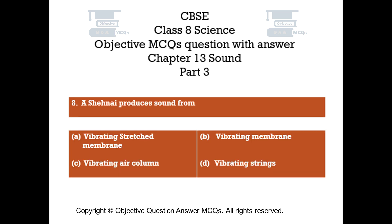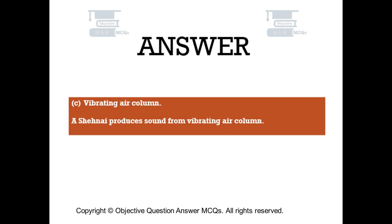Question number 8. A chenay produces sound from: Option A – vibrating stretched membrane. Option B – vibrating membrane. Option C – vibrating air column. Option D – vibrating strings. The right answer is option C. A chenay produces sound from vibrating air column.